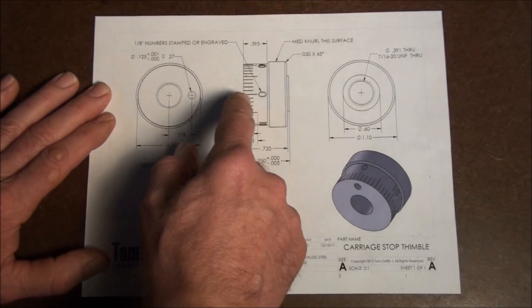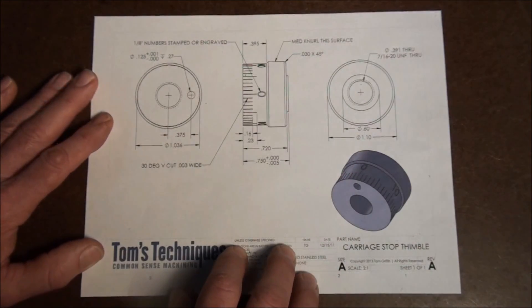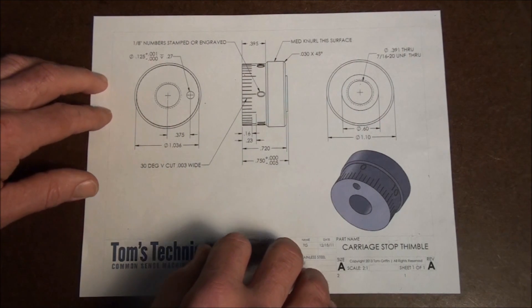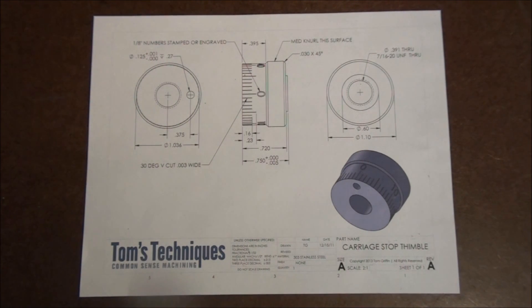We have to engrave the divisions. We have to stamp the numbers. Lots of things to do. And like I said, we have to watch out for order of operations because if we get some things done before others we might have a hard time doing them later on or it might even be impossible to do later on. So we have to make sure we don't paint ourselves into a corner.